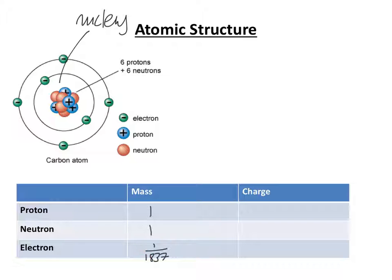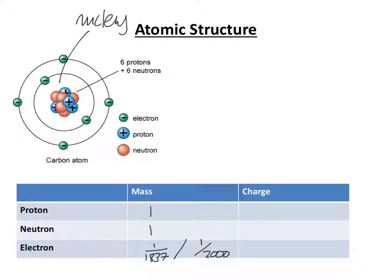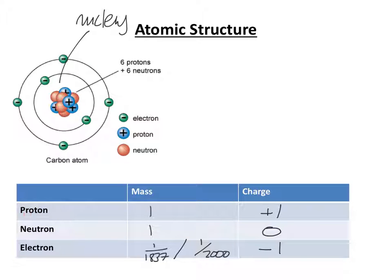So the relative mass of an electron is 1/1837. Some students find that a difficult number to remember — in an exam you're allowed to round that up and say it's one two-thousandth, but ideally 1/1837 is the number you're aiming for. Now, you could probably tell from the diagram that protons are positive, so we say they have a charge of plus one. Neutrons, unsurprisingly, are neutral, so they have no charge. And electrons are negative.